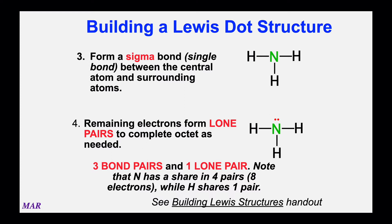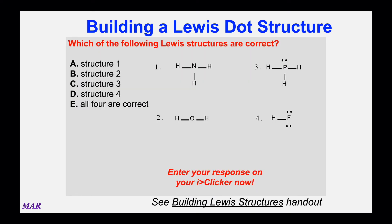To recap: we counted the valence electrons, figured out the central atom, connected the outer atoms to the inner atom with sigma bonds, placed lone pairs on outer atoms first then the central atom, and double-checked that nitrogen has an octet and three bonding pairs. In the companion materials online there's a handout called 'Building Lewis Structures' with these rules written out if you want to review them.